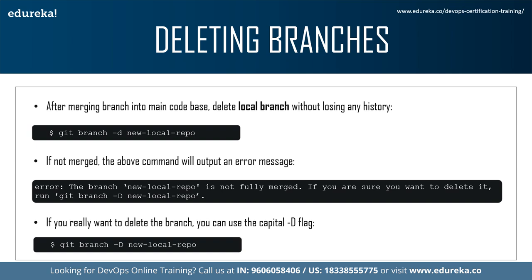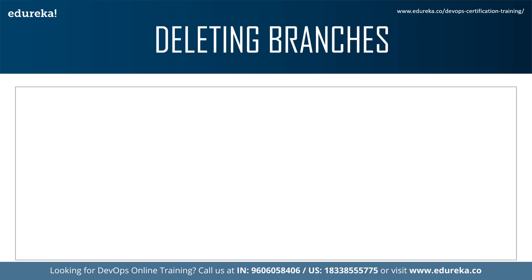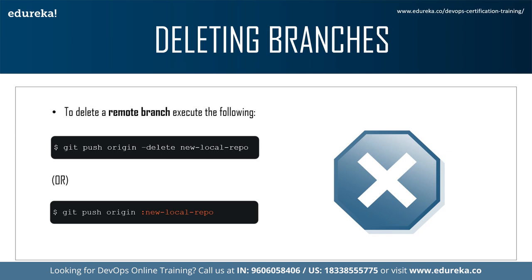The previous commands delete a local copy of a branch, but the branch may still exist in remote repositories. To delete a remote branch, execute: git push origin --delete new-local-repo, or alternatively: git push origin :new-local-repo. Both commands push a delete signal to the remote origin repository, triggering deletion of the remote new-local-repo branch.